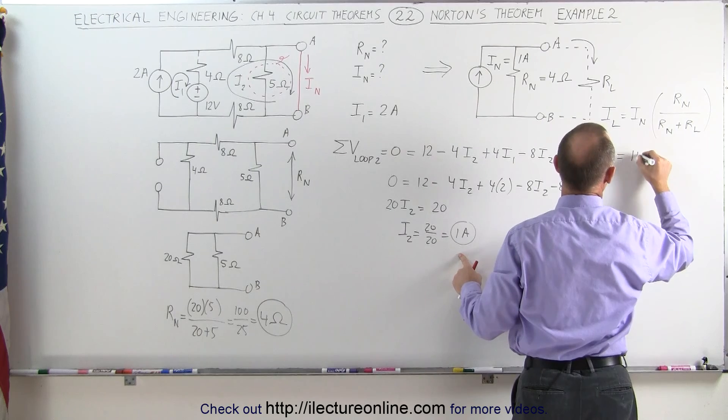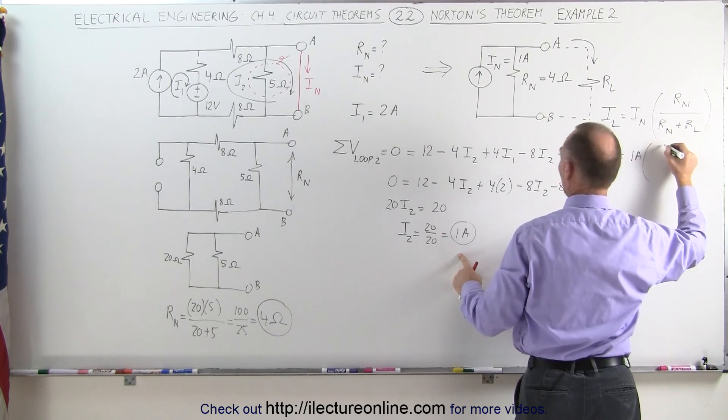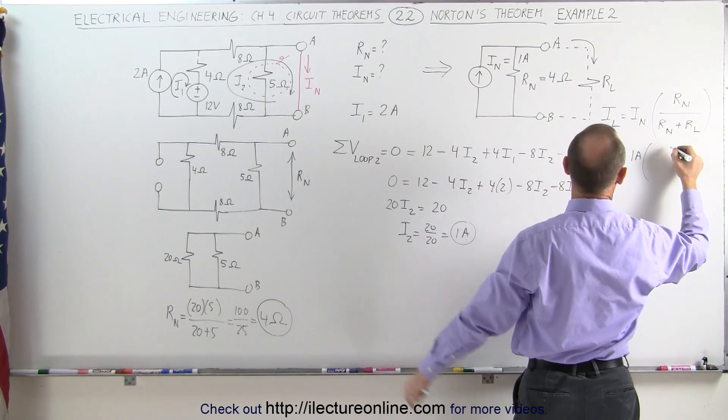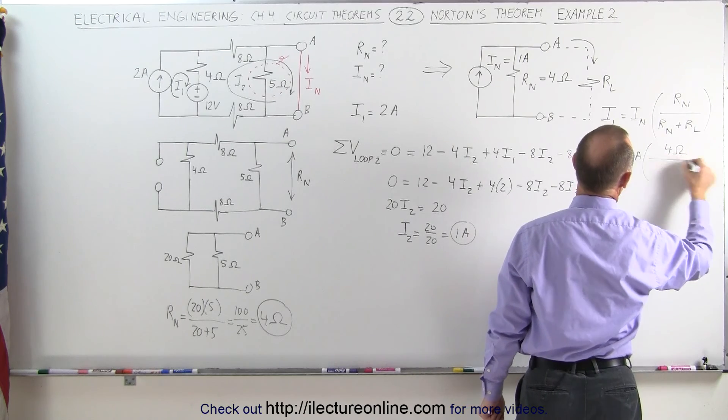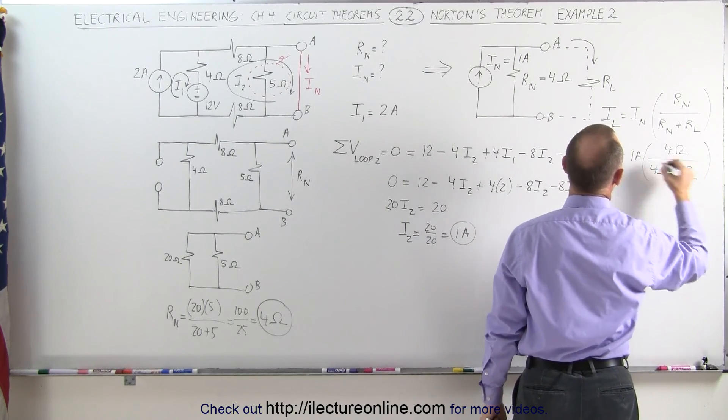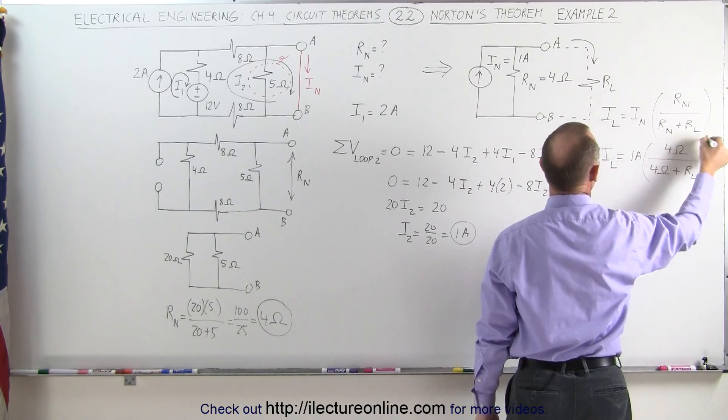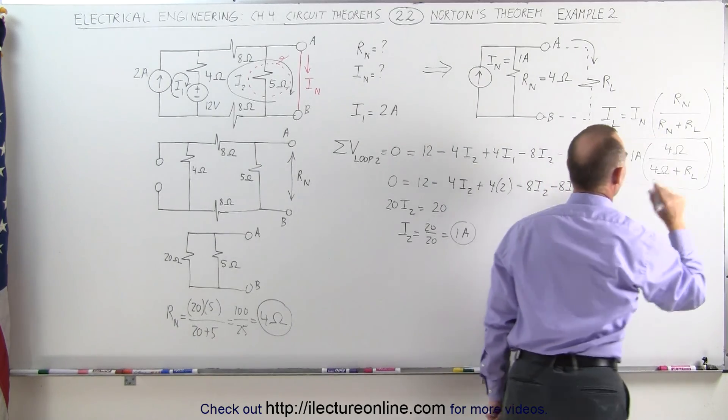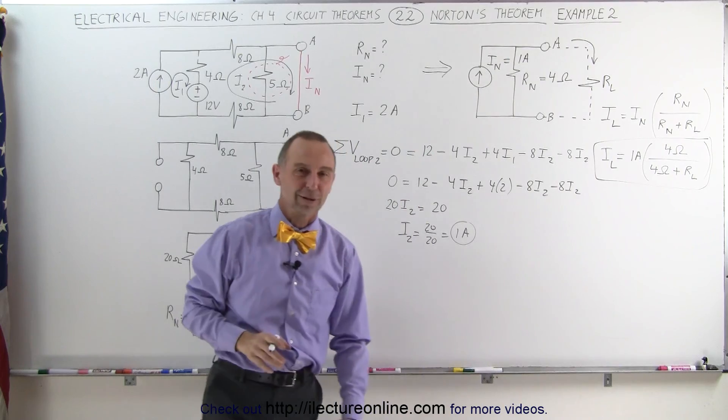Times the ratio of the Norton resistance divided by the Norton resistance plus the load resistor. And if we plug in the numbers that we have, we have 1 amp times 4 ohms divided by 4 ohms plus whatever the load resistor would be. And that will give us the current through the load resistor. And that's how we solve a circuit like this.